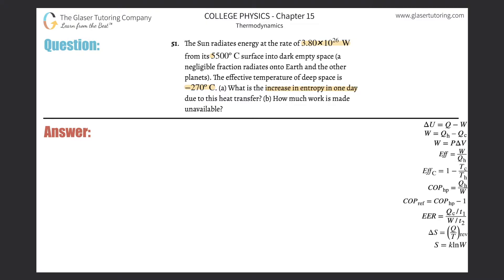Alright. So basically, we need to figure out the total change in entropy here for this entire system. What's happening is the sun is radiating energy, meaning it's losing a certain amount of energy. And if the sun is losing energy, something else is gaining the energy. What's gaining the energy in this problem? Deep space.